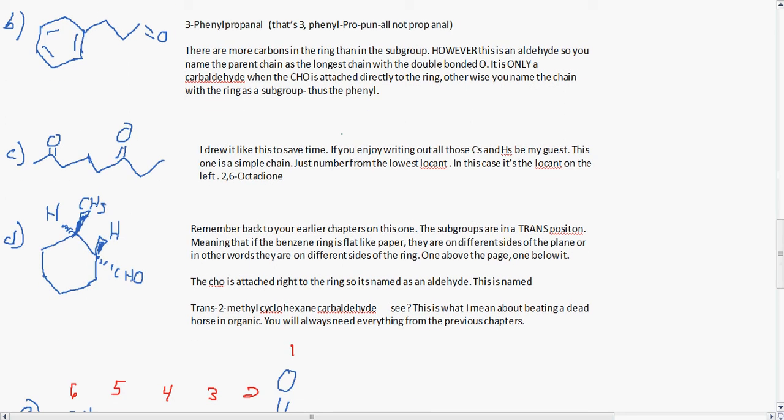On B, you have 3-phenylpropanal. There are more carbons in the ring than the subgroup, however this is an aldehyde, so you name the parent chain as the longest chain containing the double bonded O. It's only a carbaldehyde when the CHO group is attached directly to the ring, otherwise you would name the chain with the ring as a subgroup, thus the phenyl.